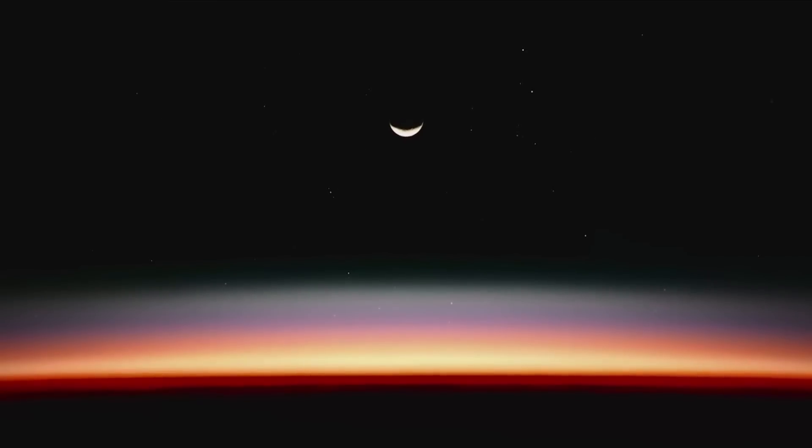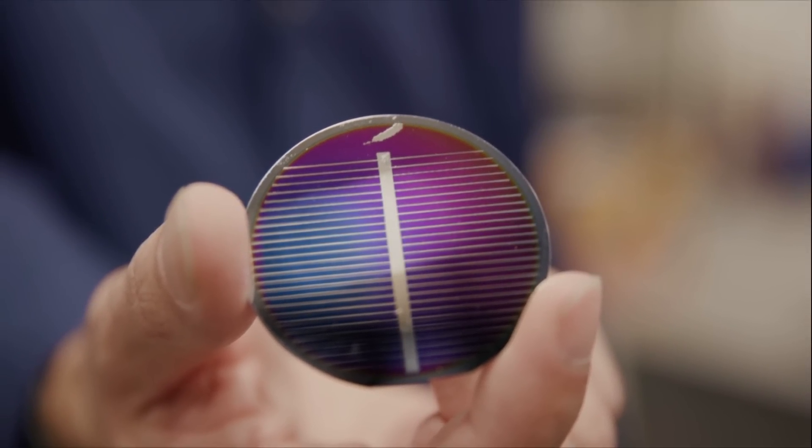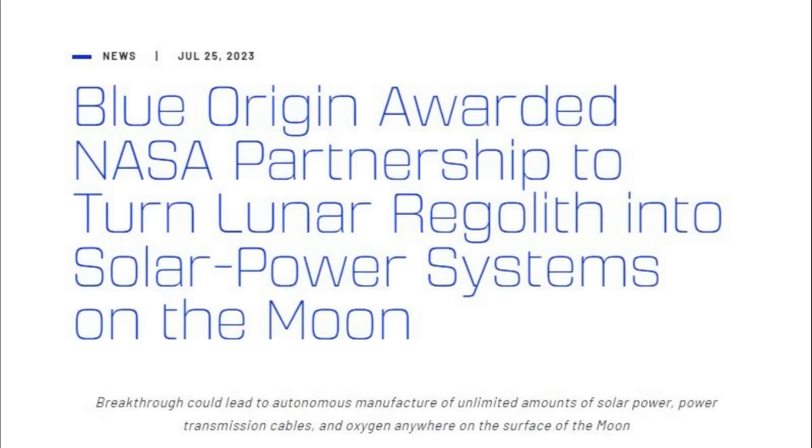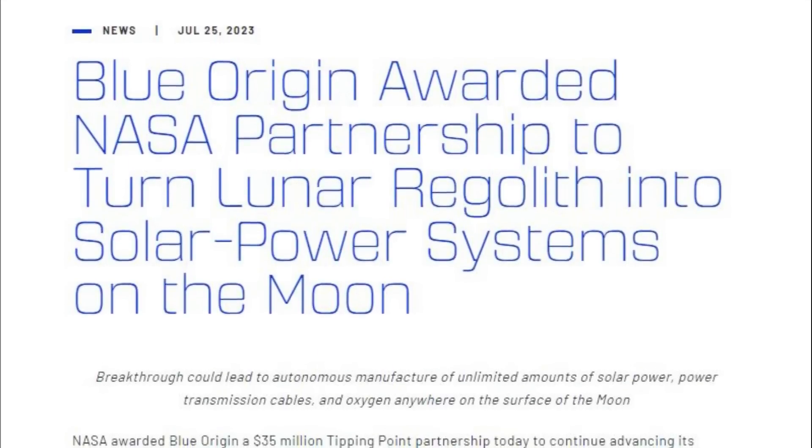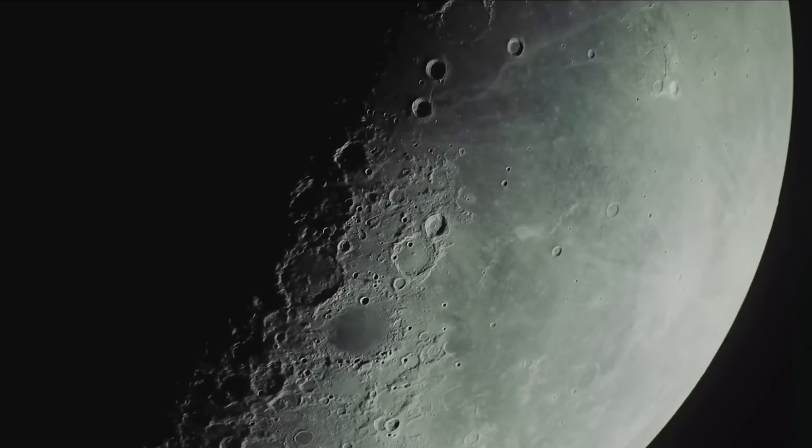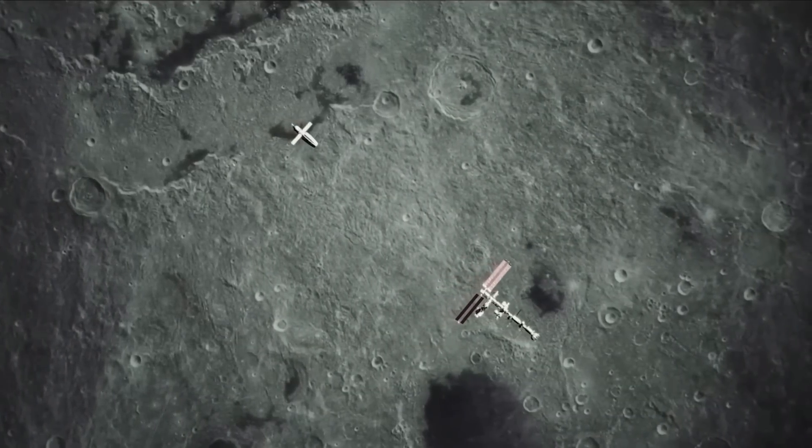The project, named Blue Alchemist, revolves around manufacturing working solar cells from lunar regolith and generating power. Earlier today, Blue Origin was awarded a NASA partnership worth $35 million in order to further pursue this project. With NASA planning to return to the moon in the coming years, and even Blue Origin working on a lunar lander, this technology could play an important future role.